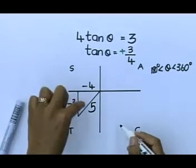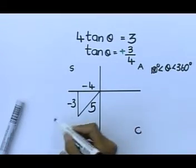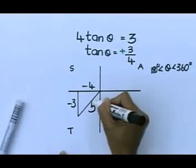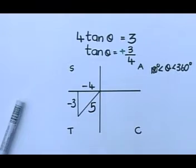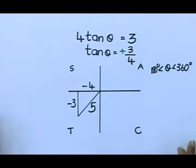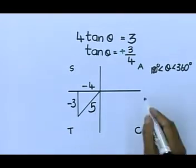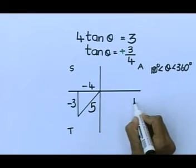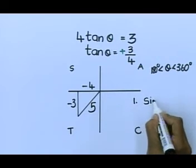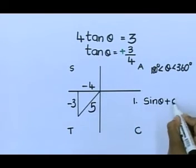Just for drawing your sketch in the third quadrant, that's your first mark. And then for working out your hypotenuse gives you your second mark. You now have your sketch. You have your sketches in front of you, and we can go look at our first question. Our first question is sin θ plus cos θ.